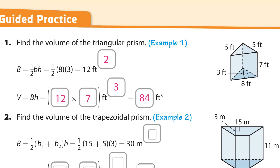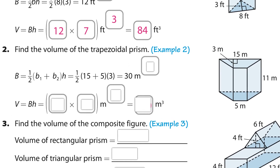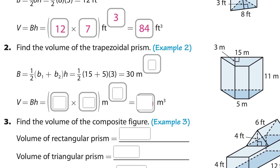Find the volume of the trapezoidal prism. The volume is the base area times the height of the prism. The base area is 30 — we take the area of the trapezoid.